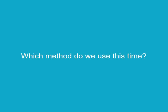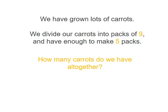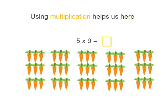Which method do we use this time? We have grown lots of carrots. We divide our carrots into packs of 9 and have enough to make five packs. How many carrots do we have all together? Well remember we're looking for a total so multiplication helps us here. 5 multiplied by 9 or 5 groups of 9 gives us our total.